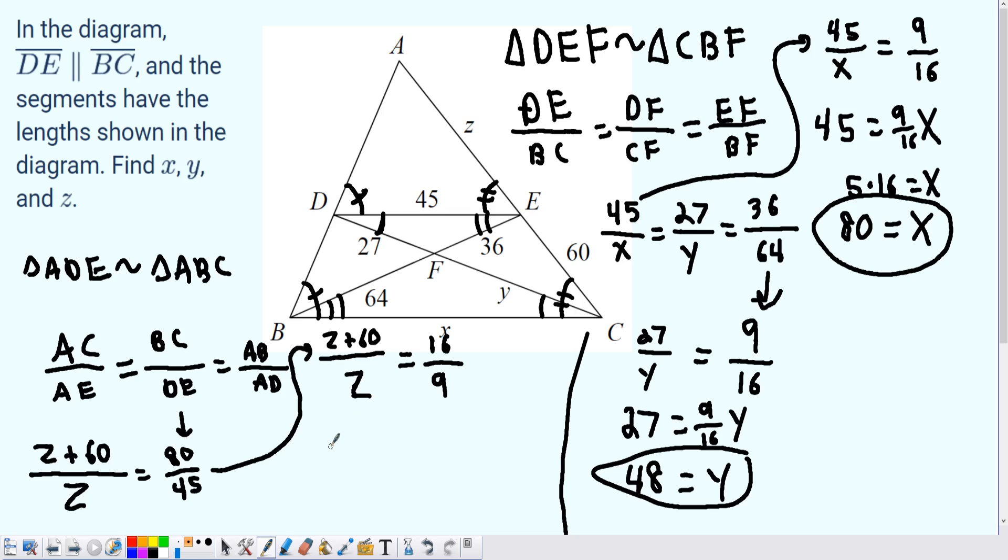Now I am going to cross multiply to get 16z equals 9z plus 540. If we subtract the 9z on both sides, we should be getting 7z equals 540.